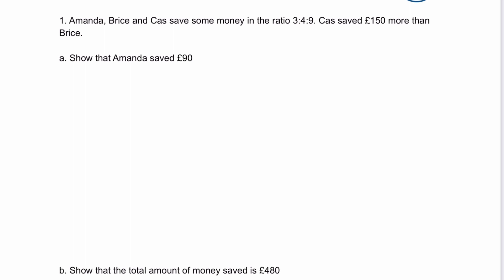For Amanda, Bryce and Cass, we're looking at a ratio question. They're saving in the ratio 3 to 4 to 9, which means the difference between the amount Cass saves and Bryce saves is £5. According to the question, it's not £5, it's actually £150, which is 30 times more. So we multiply everything by 30, which means Cass saves £270, Bryce saves £120 and Amanda saves £90. Therefore Amanda saves £90 for part A.